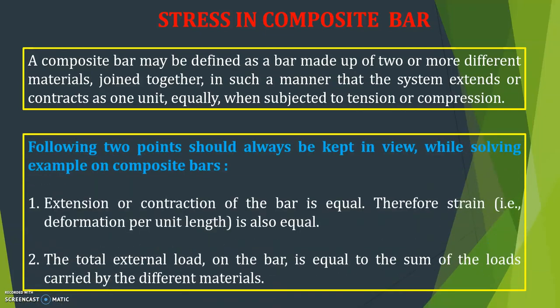You have to remember two points while solving examples on composite bars. The first one is: extension or contraction of the bar is equal, therefore strain — that is, deformation per unit length — is also equal. The second point is: the total external load on the bar is equal to the sum of the loads carried by the different materials. So if the total load is P, that is equal to P1 plus P2.